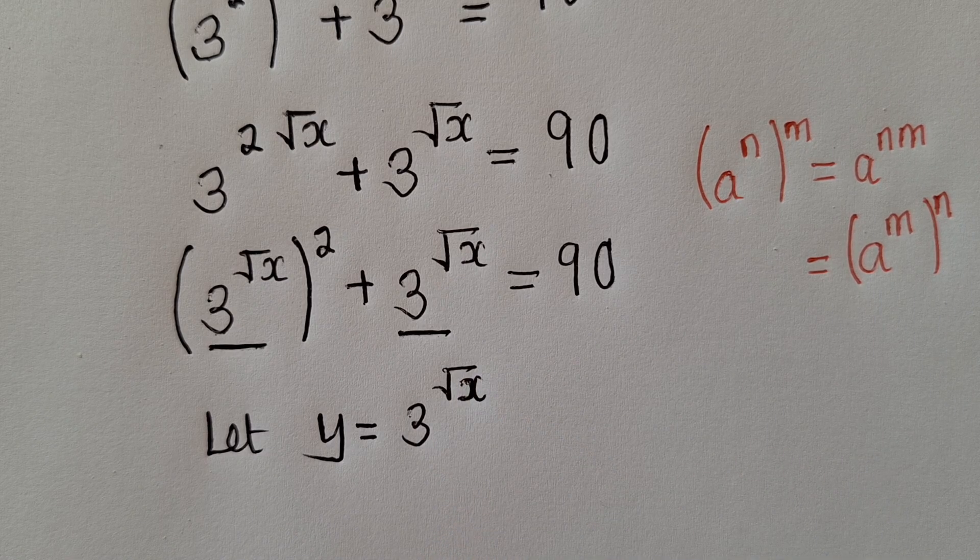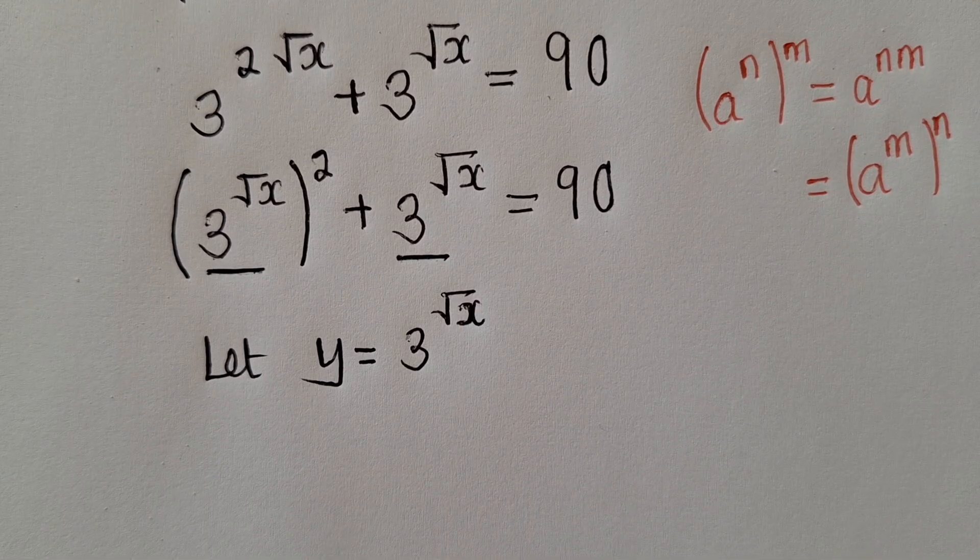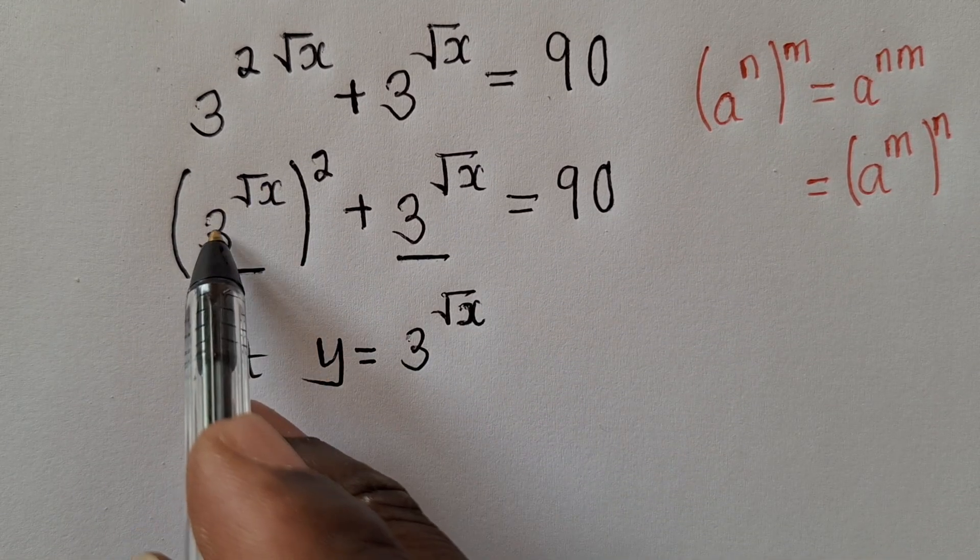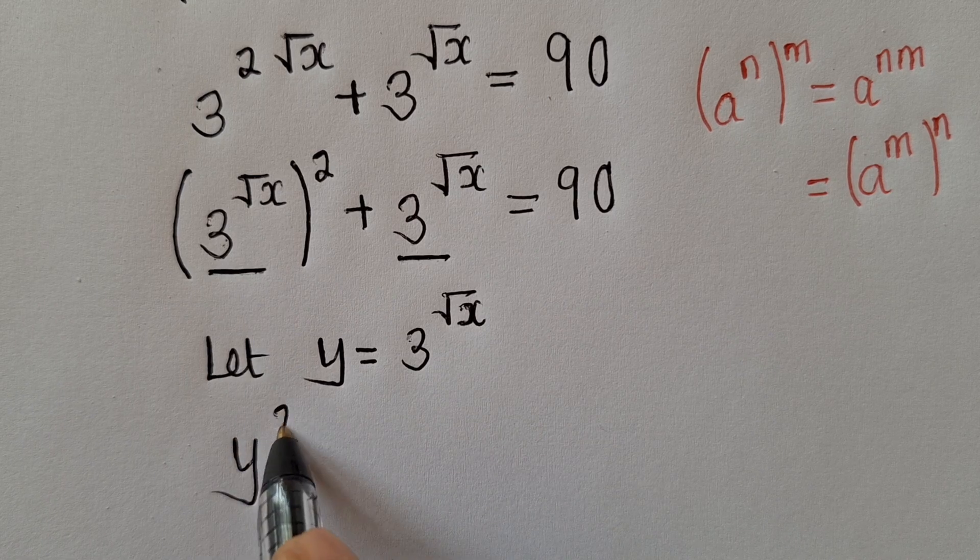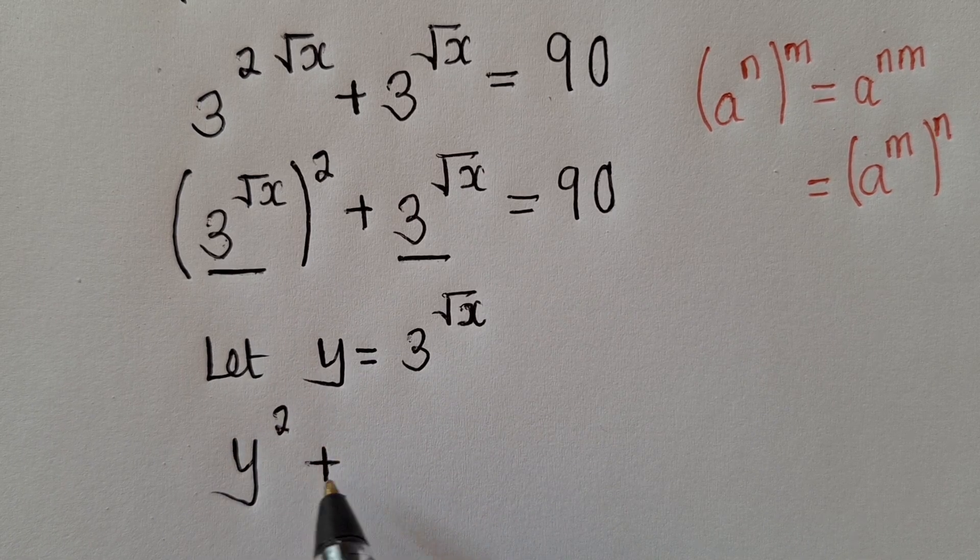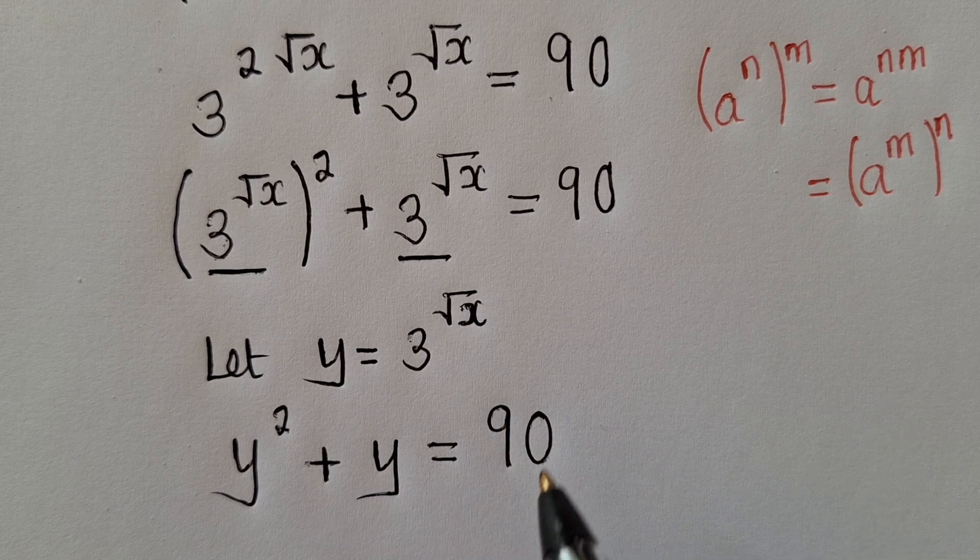Okay, so here what it means is, in place of 3 power square root of x, I'll write y power 2 here, plus y is equal to 90. So this y has been written here and here. This is how it looks.